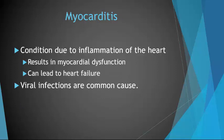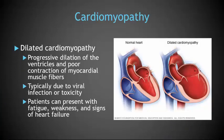Myocarditis is a condition due to inflammation of the heart. It results in myocardial dysfunction and can lead to heart failure. In contrast to adults, most children with myocarditis present with acute disease resulting from a viral infection. There are a couple of different types of cardiomyopathy. Dilated cardiomyopathy is a progressive dilation of the ventricles and poor contraction of the myocardial muscle fibers — you lose your stretch and your push — typically due to viral infection or toxicity. Patients can present with fatigue, weakness, and signs of heart failure. Dilated cardiomyopathy is the most common type in children, with an estimated 30% to 50% of cases being inherited.